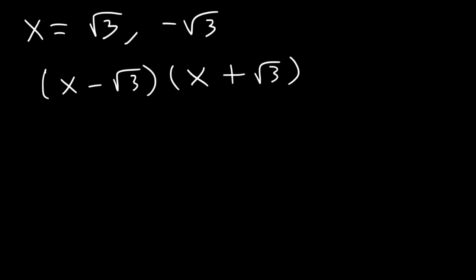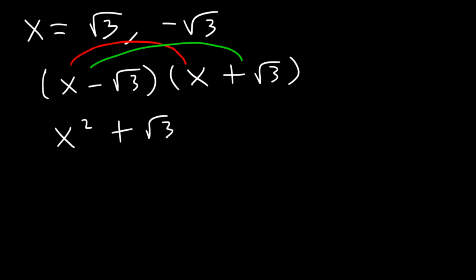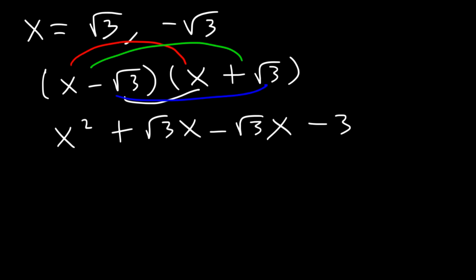FOIL it: x times x is x squared. x times root 3 is positive root 3x. Negative root 3 times x is negative root 3x. And negative root 3 times positive root 3 is negative 3. The middle terms cancel and add to 0. So the final answer is x squared minus 3 equals 0.